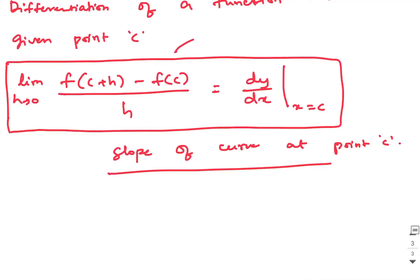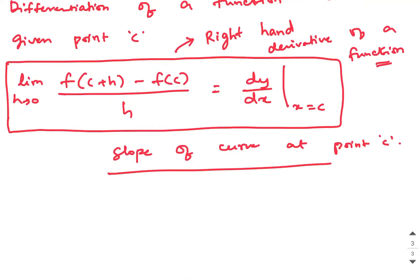This formula is also called the right hand derivative of a function. There is a counterpart called the left hand derivative, which we will see in the next video. Just as for continuity we took the left limit and the right limit, similarly to prove that a given function is differentiable, you need to take the left hand derivative and right hand derivative. The first principle of derivatives represents the right hand derivative of a function at a given point.